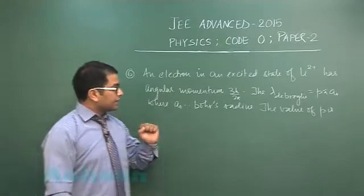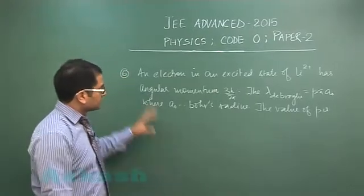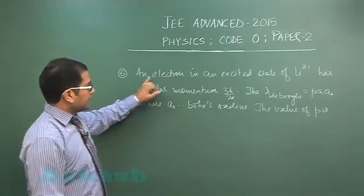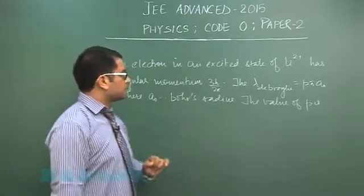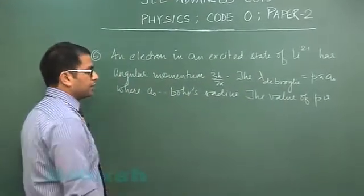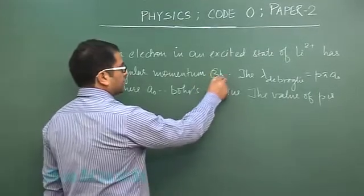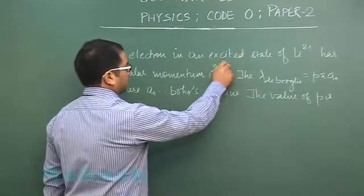Question number six is again from modern physics, from the topic atom. An electron in an excited state of lithium 2 plus has angular momentum 3h by 2π, so this quite obviously has to be n because nh by 2π is the angular momentum.